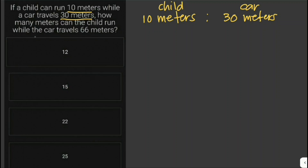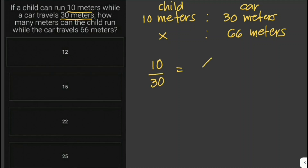How many meters can the child run while the car travels 66 meters? We let x be the distance the child can run while the car travels 66 meters. So that is x is to 66 meters. We can write this as 10 is to 30 equals x is to 66, and then we can cross multiply.